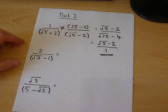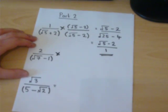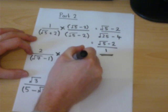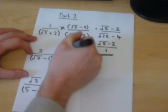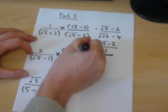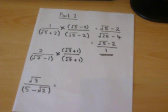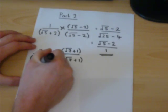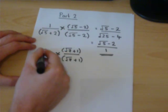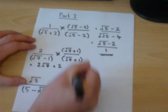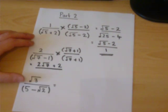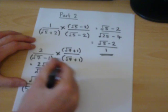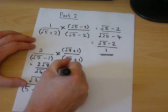The second one works in the same principle. This time we times the top and bottom by the same expression but with the sign changed. We then work out the top. 2 times root 7 is 2 root 7. 2 times 1 is 2. And then the shortcut still applies. Root of 7 times root of 7 is root of 49. 1 times 1 is 1 is a minus, so take away 1.